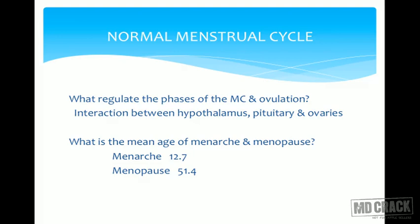On average, the age of menarche is 12.7 years. Once menstruation starts at menarche, the menstrual cycle continues till menopause, and on average the age of menopause is 51 years.